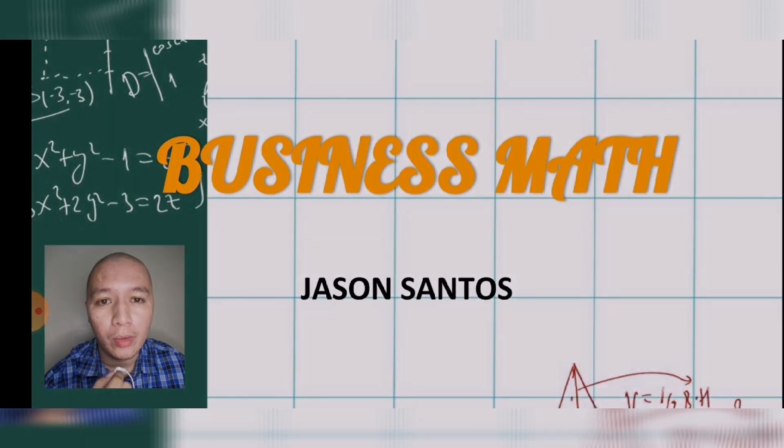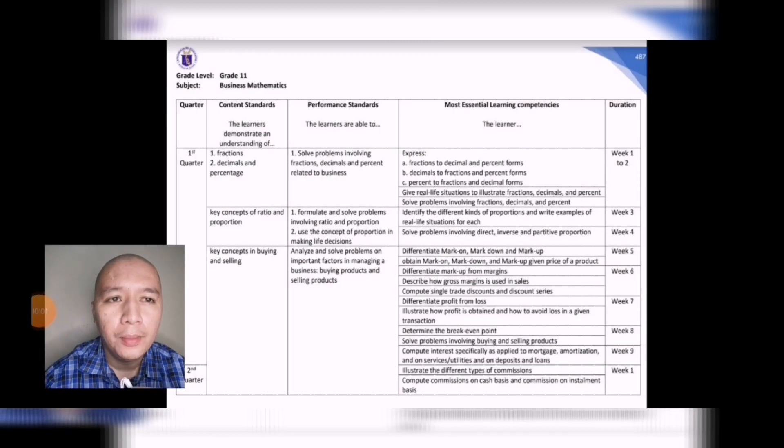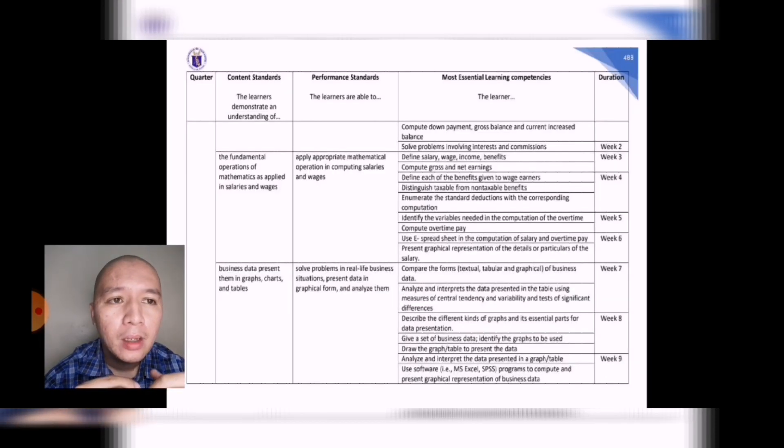Here are the parts of the entire course of Business Math. For week one we will be dealing with fractions, decimals, and percentages. Then we will also be covering ratio and proportion in week three, and concepts of buying and selling in weeks five up to nine.